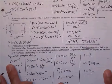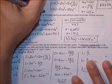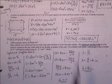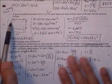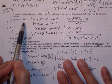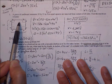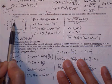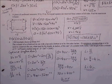Number three: a piece of cardboard measures 10 by 15 inches. Four equal squares are removed from the corners. Find the maximum volume. Imagine each corner is cut out, and then the flaps are folded up to make a box with no top.